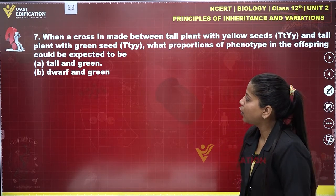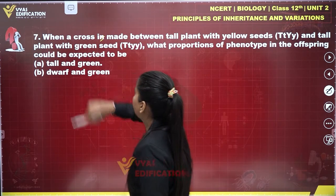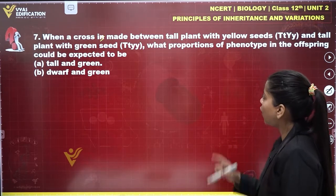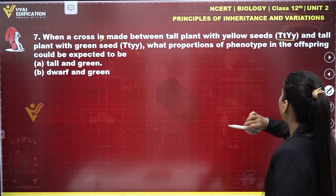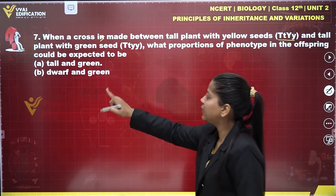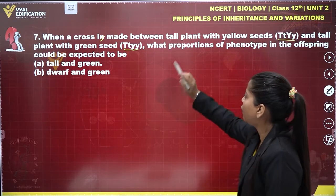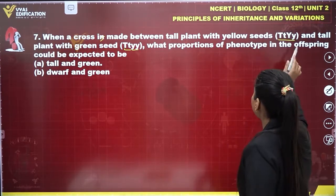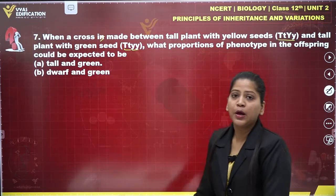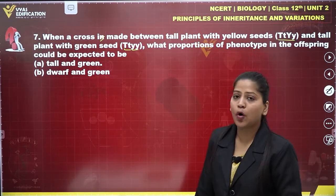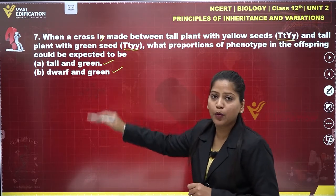Let's talk about question number seven. When a cross is made between a tall plant with yellow seed (TtYy) and a tall plant with green seed (TtYy), what proportions of the phenotype in the offspring could be expected to be tall and green, and dwarf and green?